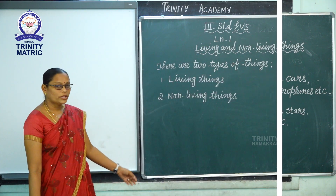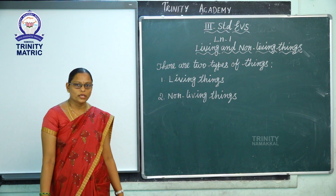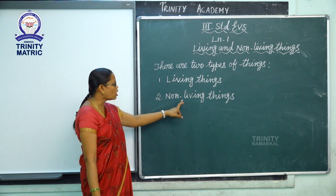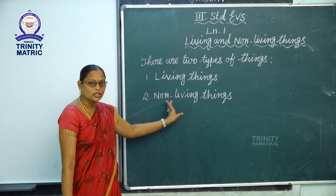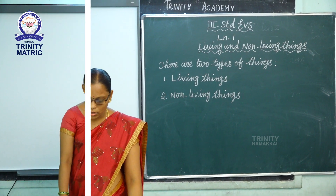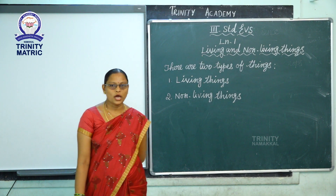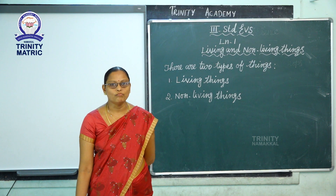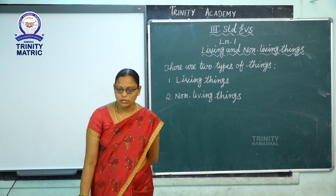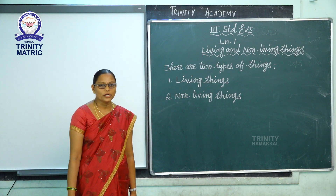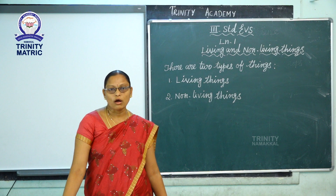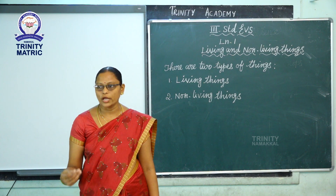Our earth is made up of wonderful things. There are two types of things: living things and non-living things. First, we will see living things. What are living things? The things which can move and breathe are called living things. Living things need food and water — they can't live without food and water.